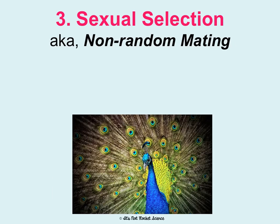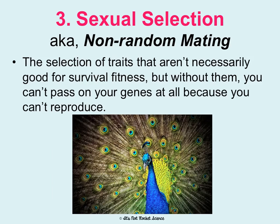Then we have sexual selection, also known as non-random mating. This is so interesting — it's actually the selection of traits that aren't necessarily good for survival and fitness, but without them you can't pass on your genes at all because you can't reproduce. This is when nature isn't dictating what traits make you best at survival, but rather what traits you need in order to reproduce at all. A really good example is male peacocks: they have elaborate displays of color and detail in their feathers that female peacocks don't. This clearly inhibits their survival because it makes them stand out to predators and weighs them down when flying, but if they don't have this display, they aren't able to reproduce and pass on their genes.